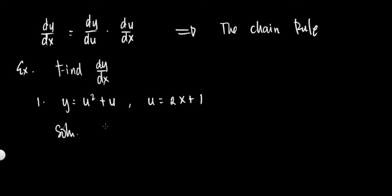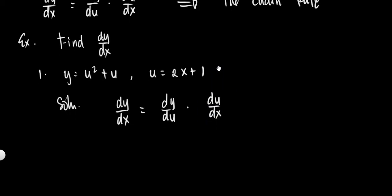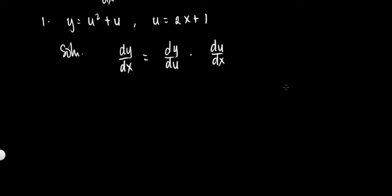For your solution, to solve for dy over dx: dy over dx is equal to dy over du, then multiply it by du over dx. So what is the derivative of y with respect to u? dy over du — derivative of u squared plus u is 2u plus 1.